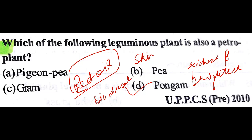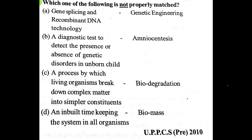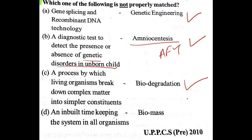Which one of the following is not properly matched? Gene splicing and recombinant DNA technology — genetic engineering: true. A diagnostic test to detect genetic disorders in an unborn child — amniocentesis or AFT: true. A process by which living organisms break down complex matter — biodegradation: true. Inbuilt time-keeping system in all organisms — biomass: no, because that is circadian rhythm. So our answer is D.